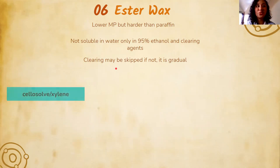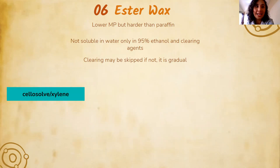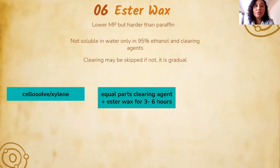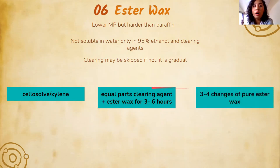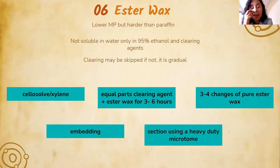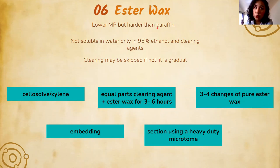For ester wax, clearing may be skipped, or if done, it should be gradual — using equal parts of clearing reagent plus ester wax for 3 to 6 hours. After that, 3 to 4 changes of pure ester wax. Then embed and use a heavy-duty microtome because ester wax is harder than paraffin despite its lower melting point. It is good for dense tissues but requires special equipment.